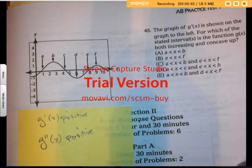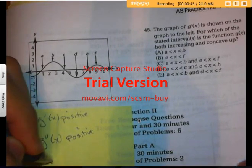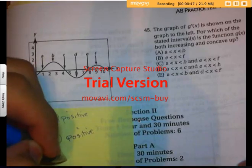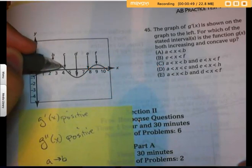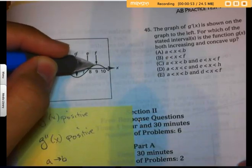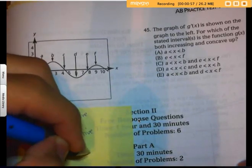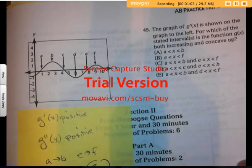So where is that occurring? Well that's occurring from a to b. And then it's negative, we're negative, we're negative, we're not... oh here's where we're positive again. So here's where we're positive and we have a positive slope from e to f. So that's gotta be C. Checking my answers, hey yes!